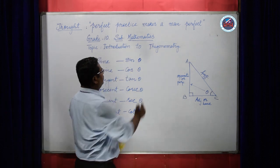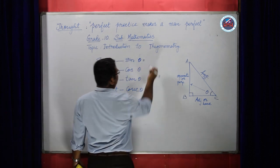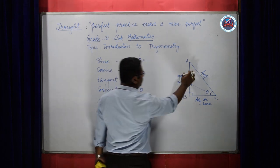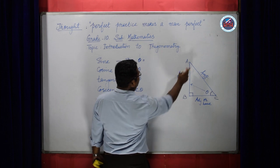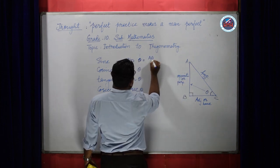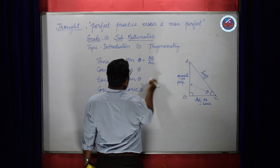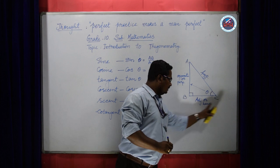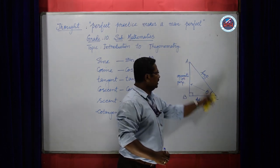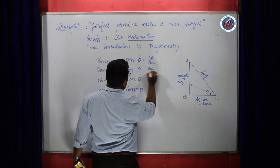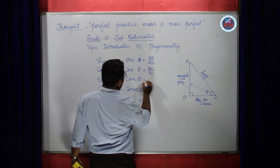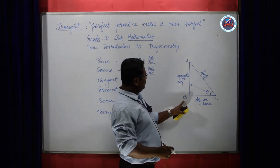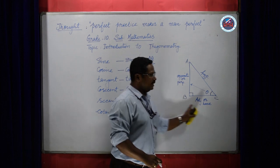So to define sine theta: it is the ratio between the perpendicular side AB to its hypotenuse AC — that is AB by AC. Cos theta is defined as the ratio between adjacent side to its hypotenuse, that is BC by AC. Tan theta is defined as the ratio between perpendicular to its adjacent side, that is AB by BC.